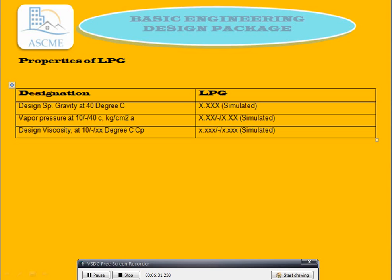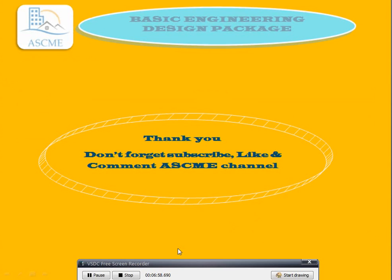Properties of LPG design: specific gravity at 40 degrees Celsius. Vapor pressure at 10 to 40 degrees Celsius in kg per cubic meter. Design viscosity at 10 to 40 degrees Celsius. Once you receive the data from the original plant, these standard values can be applied.